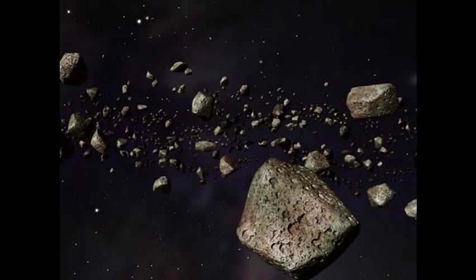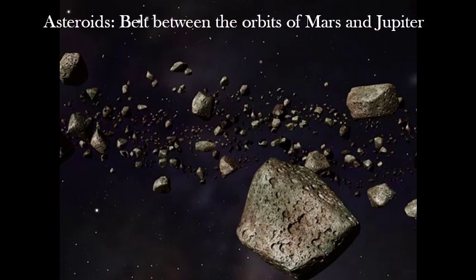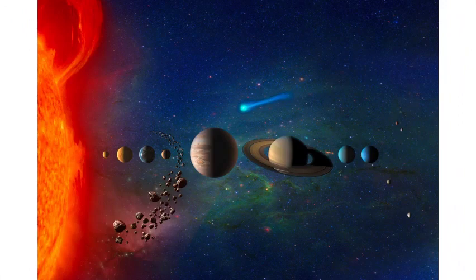These rocks are called asteroids. There is a belt of these kinds of rocks in between Mars and Jupiter, and they are also revolving around the Sun. This belt of rocks is called the asteroid belt. As you can see, the belt is there in between Mars and Jupiter. You can also see in this picture that Jupiter is the biggest planet of them all.